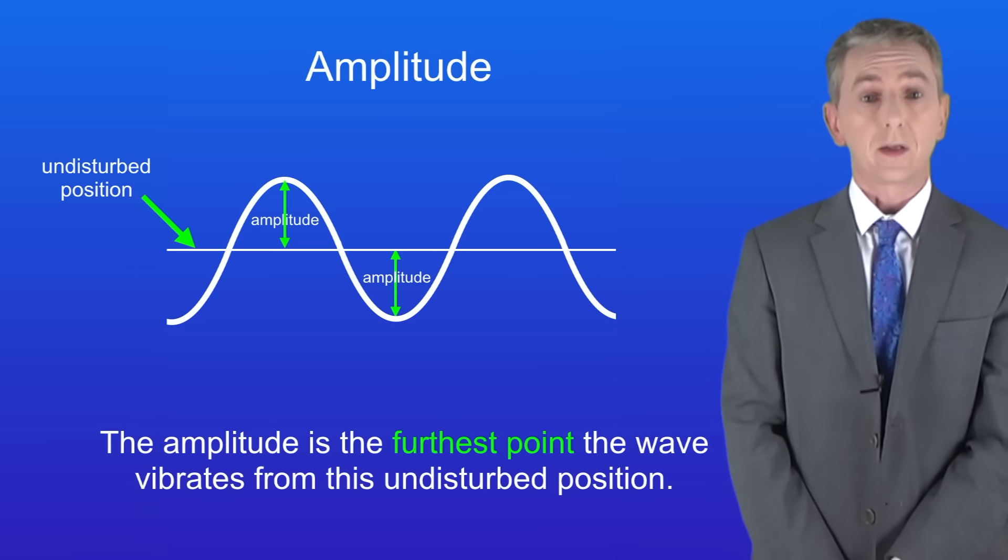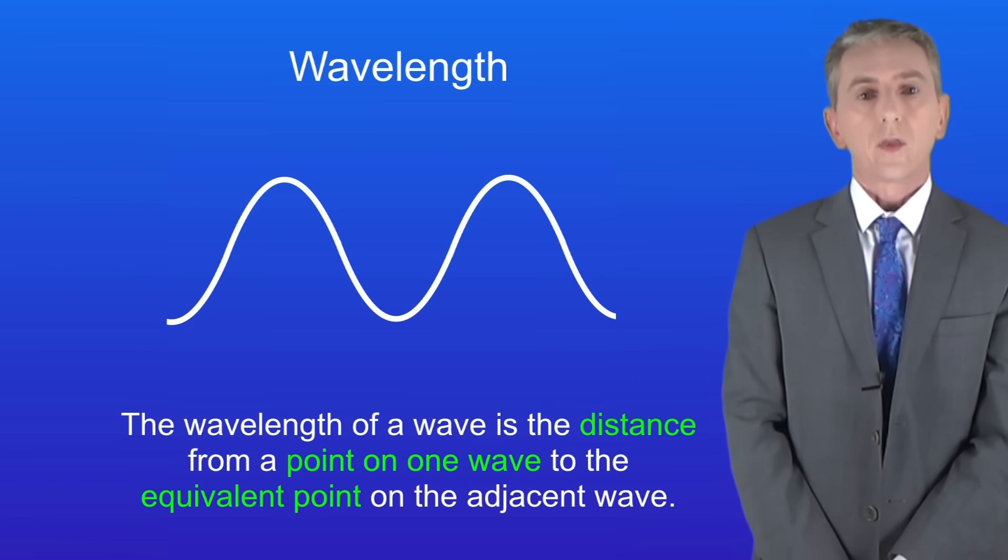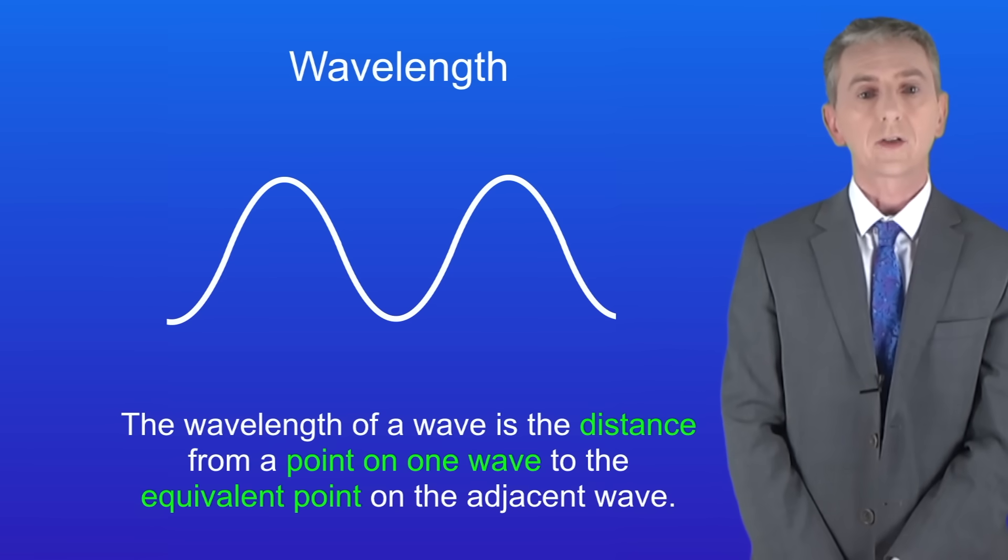Okay, the next key feature of waves is the wavelength, so we're going to look at that now. Here's the definition. The wavelength of a wave is the distance from a point on one wave to the equivalent point on the adjacent wave. So what does that mean?